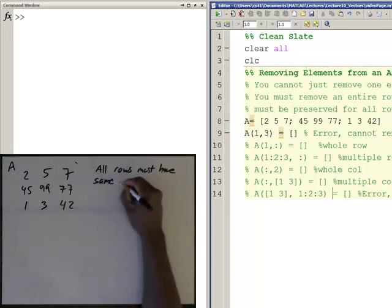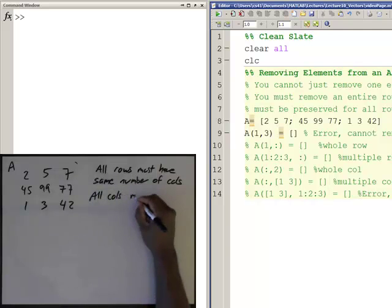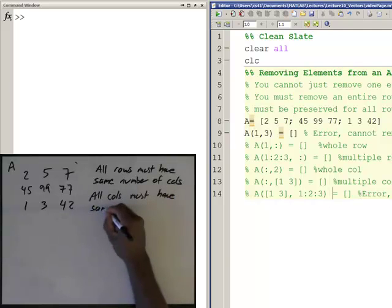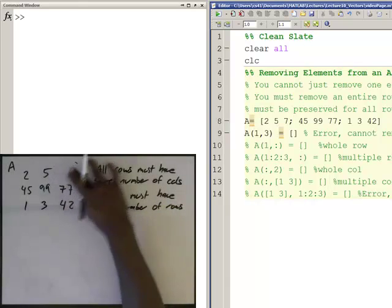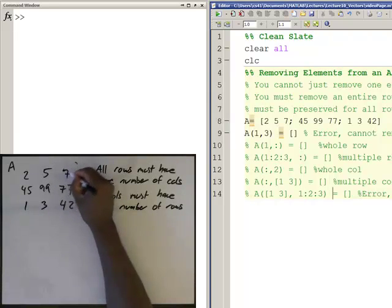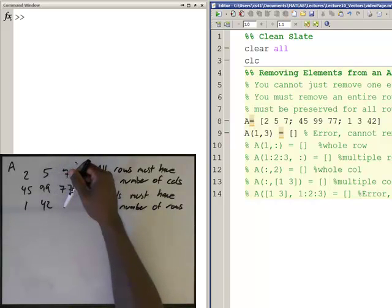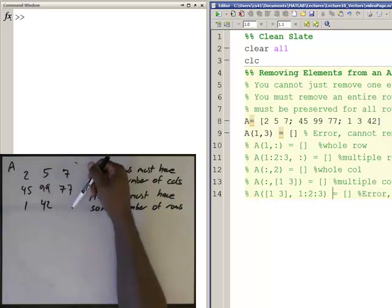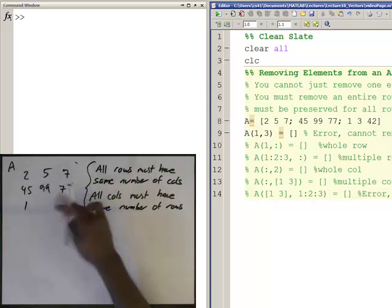I think that's probably the best rule. Let's put that down: all rows must have same number of columns and all columns must have same number of rows. So if I were trying to remove this seven, then row one would only have two items in it whereas rows two and three would have three in it, and you can't do that. That's a violation. If I were trying to remove this in the middle, which would then squeeze this down, now row three would only have two items in it, two columns, whereas rows one and two would have three items. Likewise, column three would only have two items in it and columns one and two would have three, so that would violate this rule.